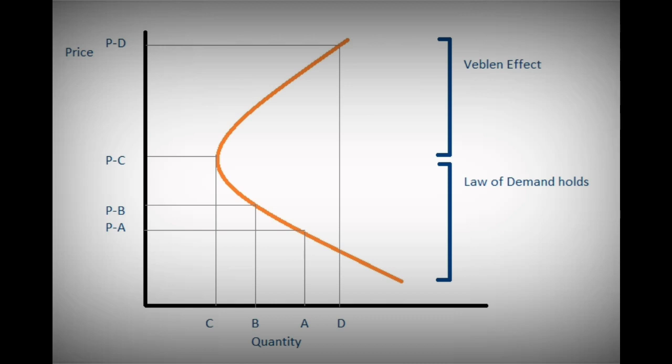Let us look at this demand curve. When the price of a particular commodity was P, the demand was A. As the price of the commodity rises further, the quantity demanded falls from A to B. As the price rises further still, the quantity demanded falls from B to C. So between prices A and C, the law of demand holds and there exists an inverse relationship between the price of a commodity and demand for that commodity.